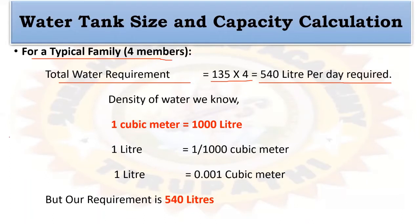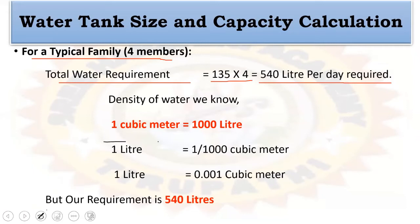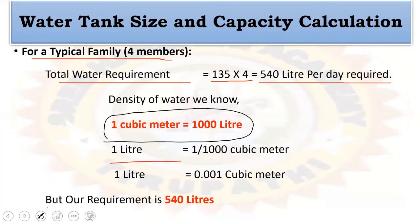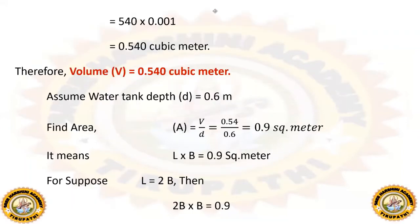As we know, 1 cubic meter is equal to 1000 liters, and similarly 1 liter is equal to 0.001 cubic meters. Our requirement is 540 liters, so to design the tank: 540 multiplied by 0.001 gives us 0.54 cubic meters.